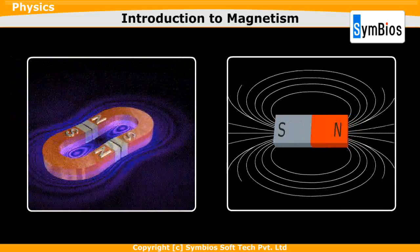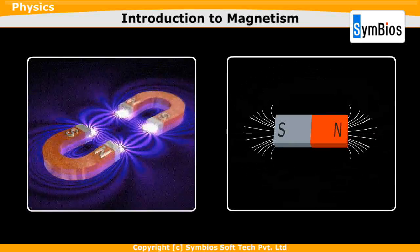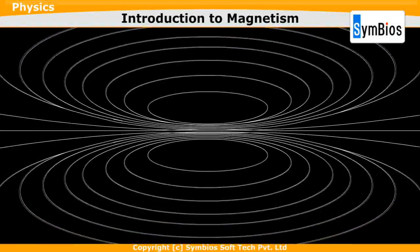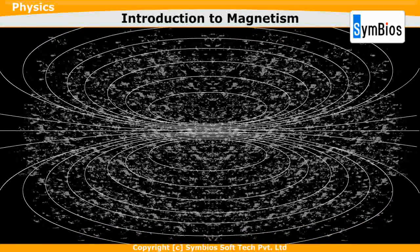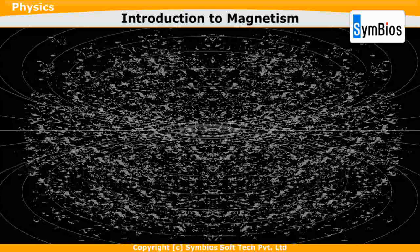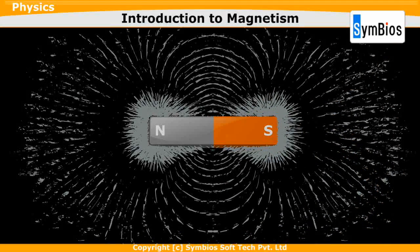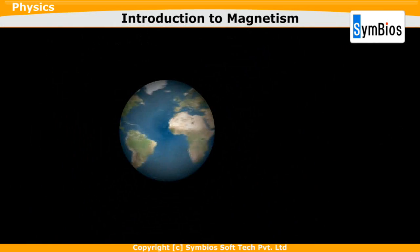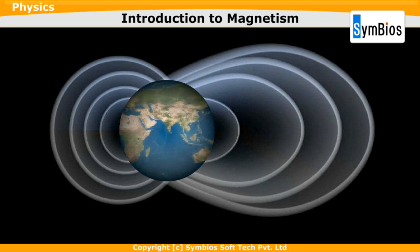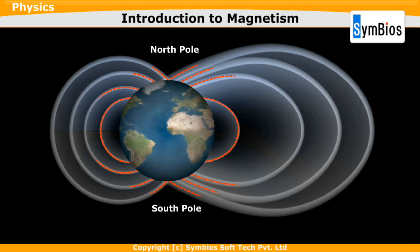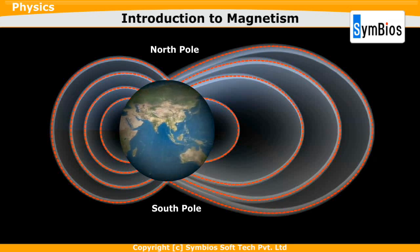Every magnet has a magnetic field around it. We can identify this magnetic field by sprinkling iron filings around a bar magnet. When we do this, we can see the iron filings aligning themselves along the magnetic field of the magnet. Our earth is also a magnet and has two poles, north and south, and it has a magnetic field around it.